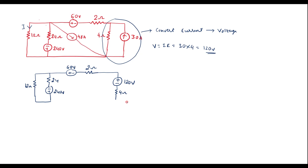We connect this 4 ohm resistor in series with the voltage source. There is also a current source of 48 amps in between. Now we observe that the 60 volt and 120 volt sources are in series — looking at the polarities, both are plus-minus, so these two will be added. Similarly, the 2 ohm and 4 ohm resistors are in series and can be replaced by a single 6 ohm resistor.